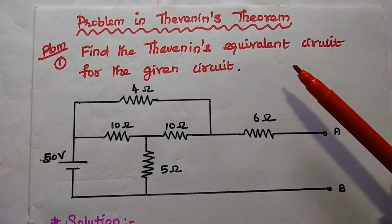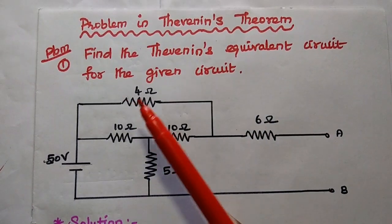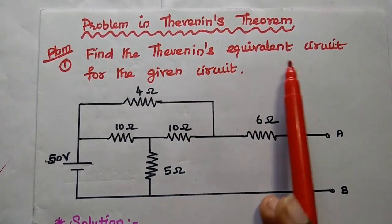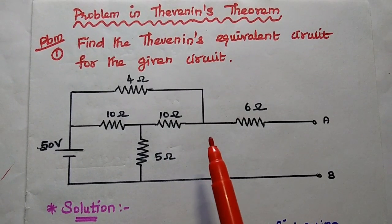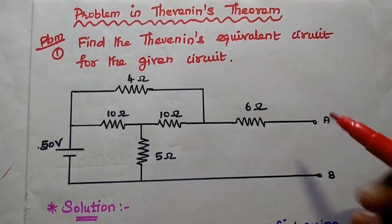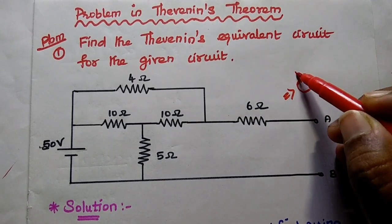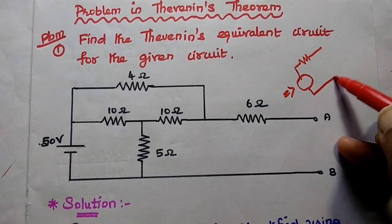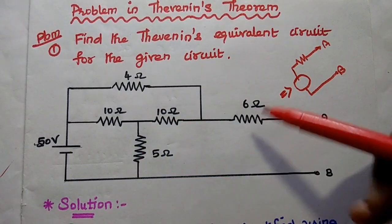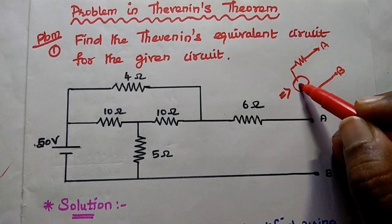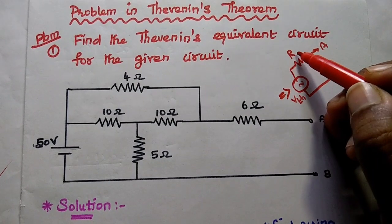Dear students, now we are going to solve an important problem in Thevenin's theorem. The problem is to find the Thevenin's equivalent circuit for the given circuit. We are going to find out the Thevenin's equivalent — that is a voltage source in series with an equivalent impedance — between the terminals A and B. This circuit can be converted into the Thevenin's equivalent circuit, and we are going to find out the Thevenin's voltage and the Thevenin's resistance.